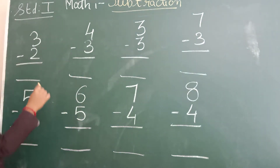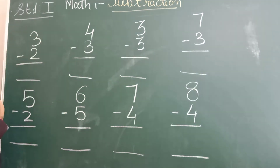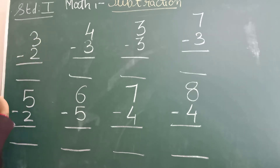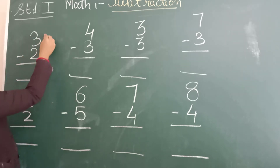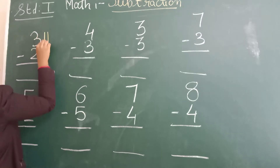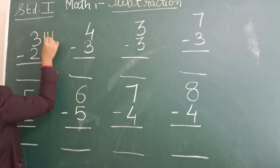The numbers are 3 minus 2. What you will do? Just put a line — 3 lines in front of 3.